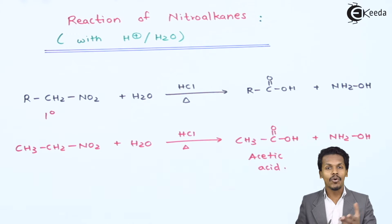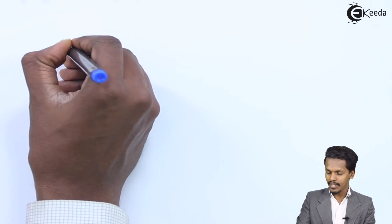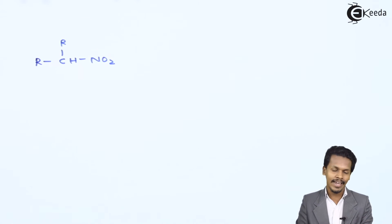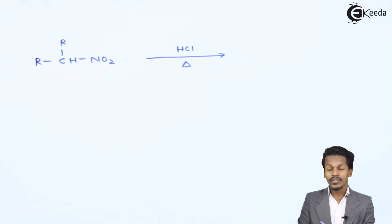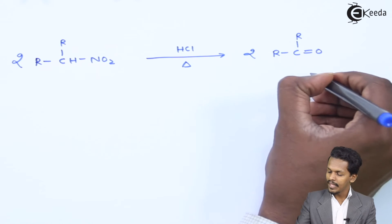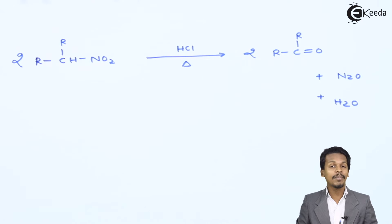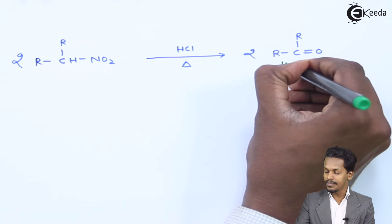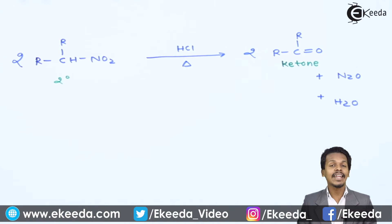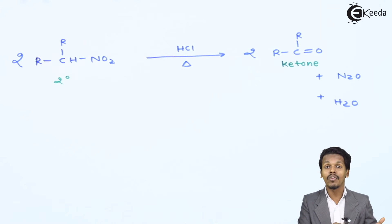Now let us talk about the hydrolysis reaction for secondary nitroalkane. Suppose if I consider a secondary nitroalkane, that is R2CHNO2, and react it with HCl. The reaction is different from the previous one. In this case we need 2 moles of secondary nitroalkane. The product we get is R2C=O, a ketone, along with by-products N2O (nitrous oxide) and H2O. Whenever secondary nitroalkane undergoes hydrolysis in presence of HCl, the main product is a ketone.